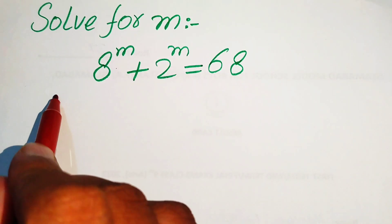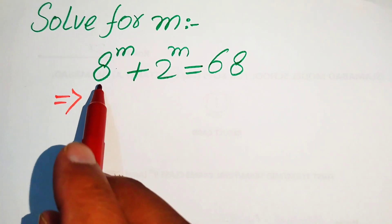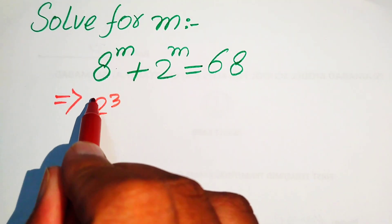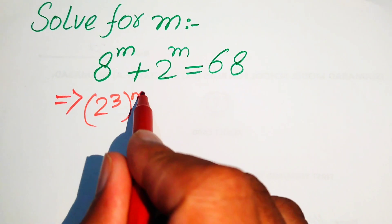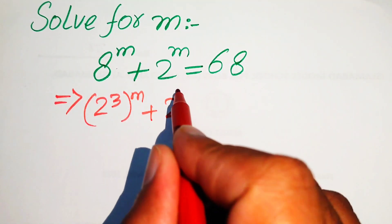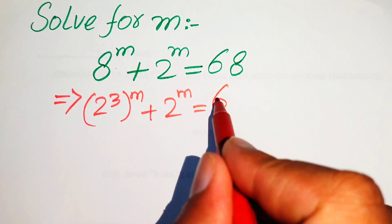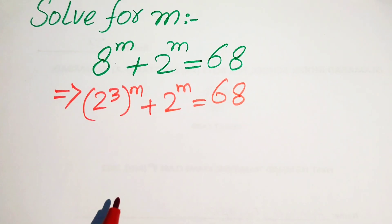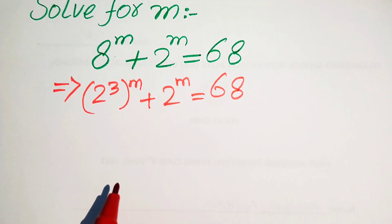We first rewrite this equation by focusing on the 8 and writing it as 2 cubed, so the whole power becomes m. Plus we write 2 to the power of m equals 68. In the next step we use the rule of interchange.